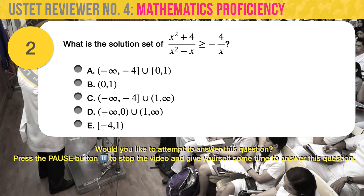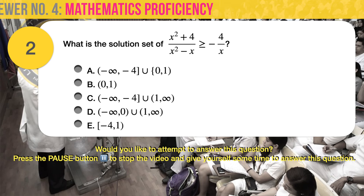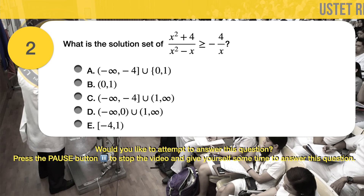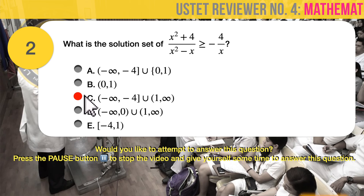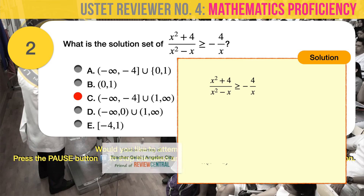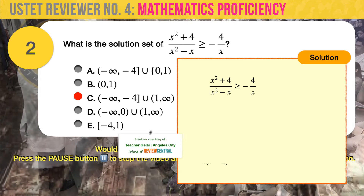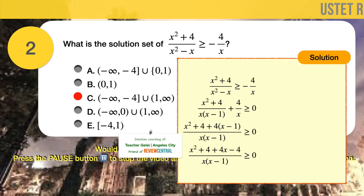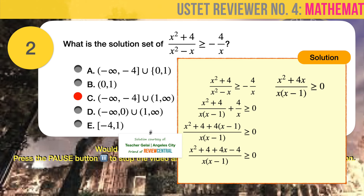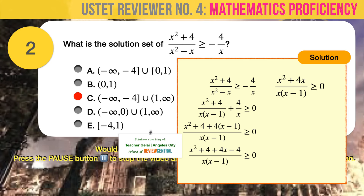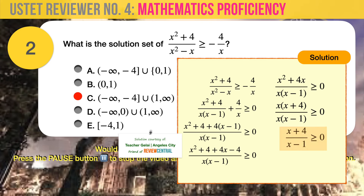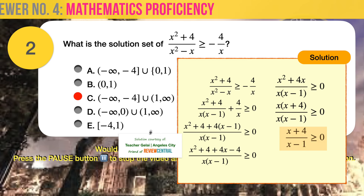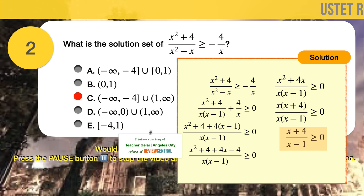Question 2. What is the solution set of the given inequality? The correct answer is C. This is a problem involving quadratic and rational inequalities. Let's simplify: first, factor out x from the denominator. Next, add the two fractions on the left using x times (x minus 1) as the least common denominator. Simplifying the numerator, we arrive at x squared plus 4x. Factor out x from the numerator, cancel it from both numerator and denominator, ending up with (x plus 4) over (x minus 1) is greater than or equal to 0.